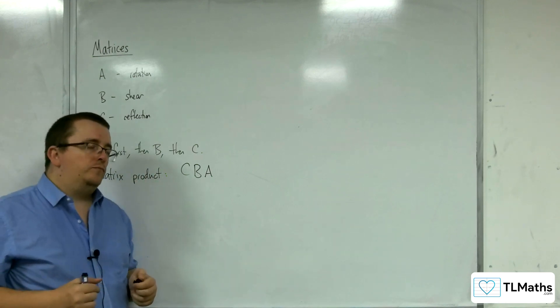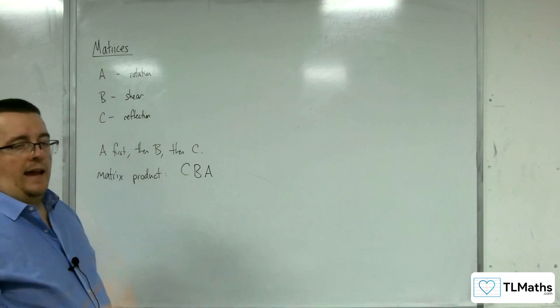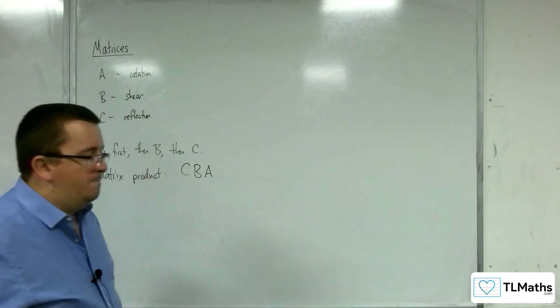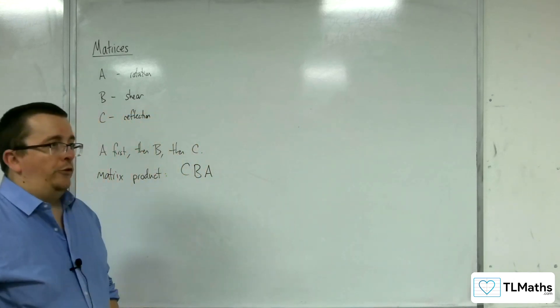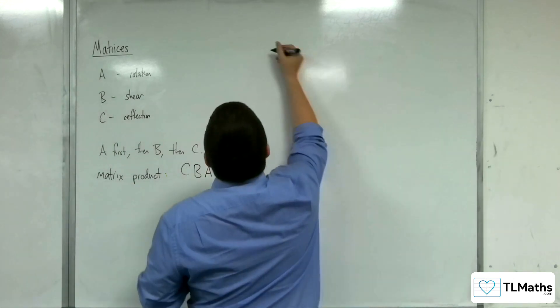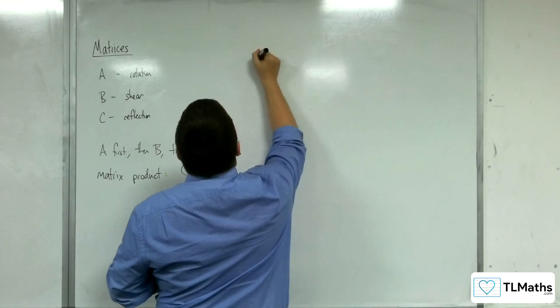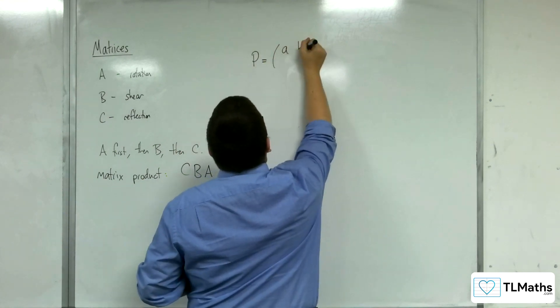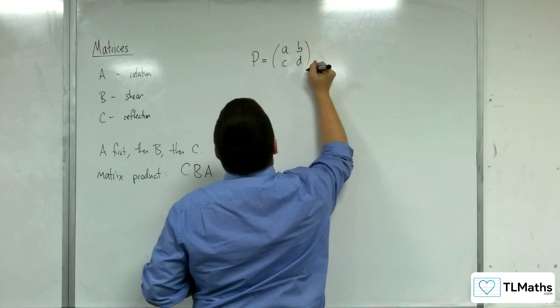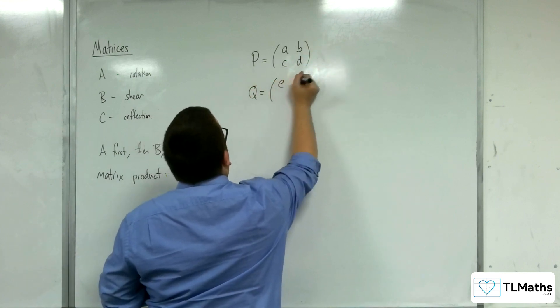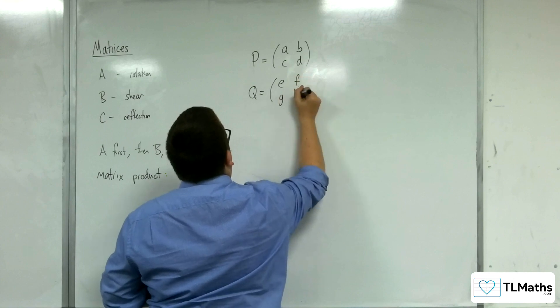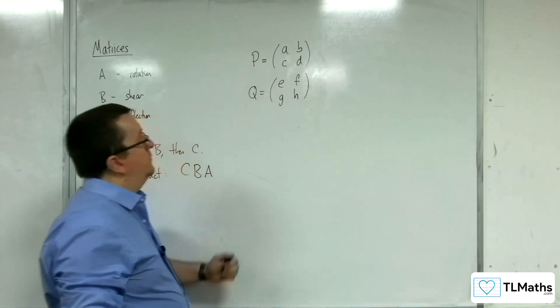So a case in point for that. Let's say you've got two transformations. So let's say we've got matrix P, and that's going to have A, B, C, and D, and we're going to have the matrix Q, which is going to be E, F, G, H.